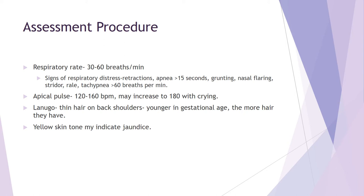Moving on to the assessment procedure for respiratory: normal respiratory rates for newborns and infants are 30 to 60 breaths per minute, which can be hard to count. Anything greater than that is considered tachypneic. Watch for signs of distress: grunting with each exhale, nasal flaring, stridor, and rales should raise a red flag that something else is going on.